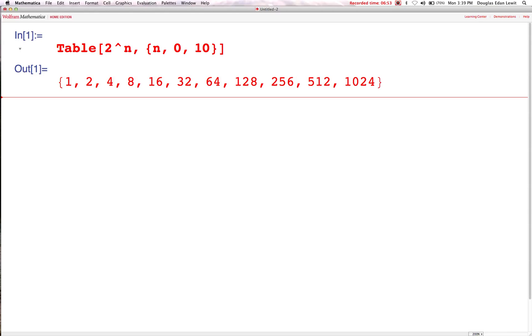There you go. So 2 to the power 0 is 1. 2 to the power 1 is 2. 2 to the power 2 is 4. 2 to the power 3 is 8. You get the idea. You have a sequence of numbers.